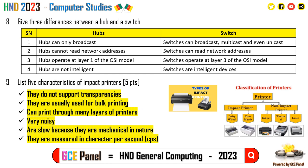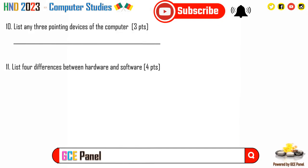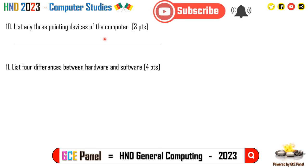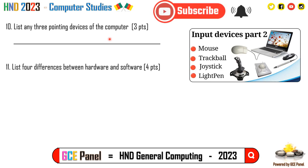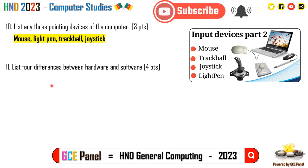Section B, Question 10: List any three pointing devices of the computer. Examples include mouse, trackball, joystick, and light pen. The mouse is the standard pointing device; the trackball has a ball; the joystick is like a gear shift; and the light pen is used directly on screen. Any three of these are acceptable.